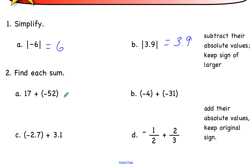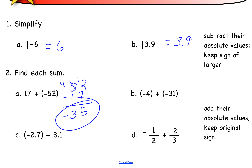Let's find each sum. First: seventeen plus a negative fifty-two. We subtract the numbers — 52 minus 17 — borrow if needed: 12 minus 7 is 5, 4 minus 1 is 3. Keep the sign of the bigger number; 52 is bigger, so the answer is negative 35. Next: negative four and negative thirty-one. Same sign, so add: 31 plus 4 is 35, keep the sign — negative 35.